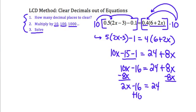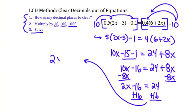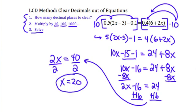Add 16 to both sides. On the left side I have 2x, and on the right side 24 plus 16 gives me 40. Final step: divide both sides by 2, and I get x equals 20. So you can see that once I cleared the decimals out of this equation, everything goes right back to the normal equation that we know how to solve. You can clear any decimals out of an equation just by multiplying by the appropriate power of 10.